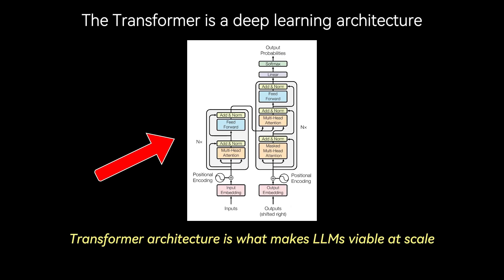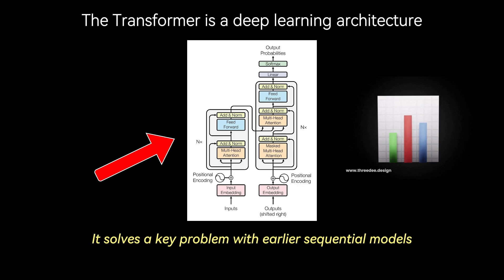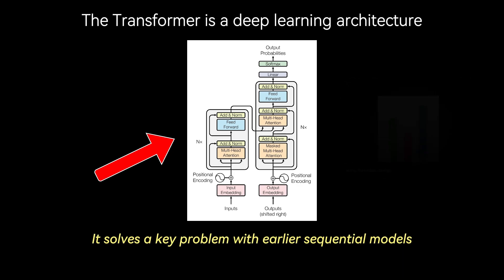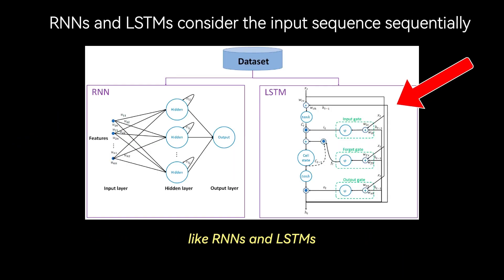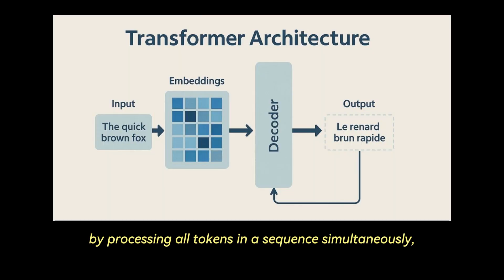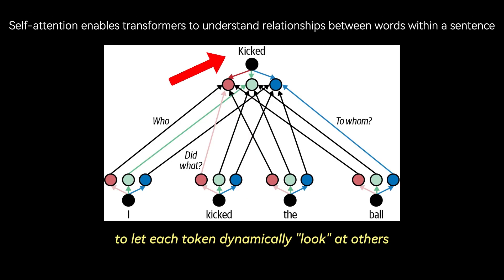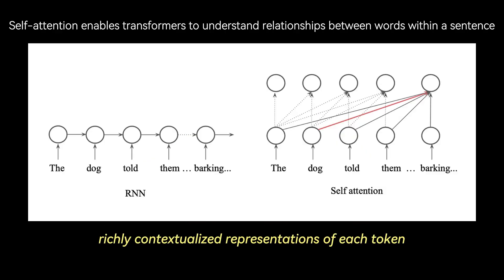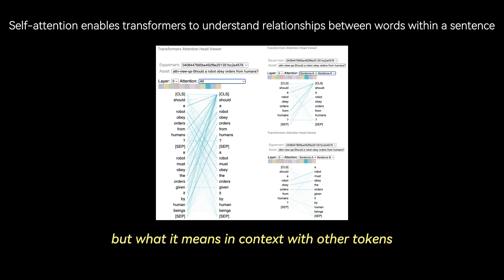The transformer architecture is what makes LLMs viable at scale. It solves a key problem with earlier sequential models like RNNs and LSTMs. They processed input one step at a time, which made it difficult to capture long-range dependencies or parallelized training. Transformers change this by processing all tokens in a sequence simultaneously, and using self-attention to let each token dynamically look at others to gather relevant context. This lets the model build richly contextualized representations of each token, not just what the token is, but what it means in context with other tokens.